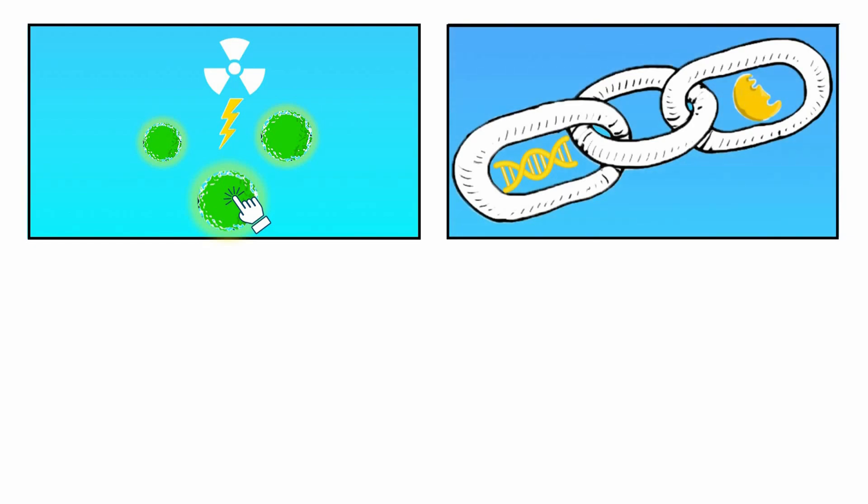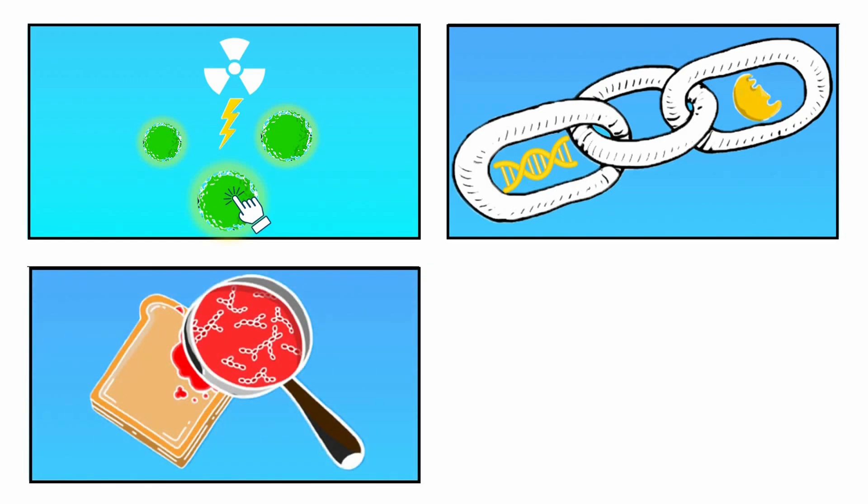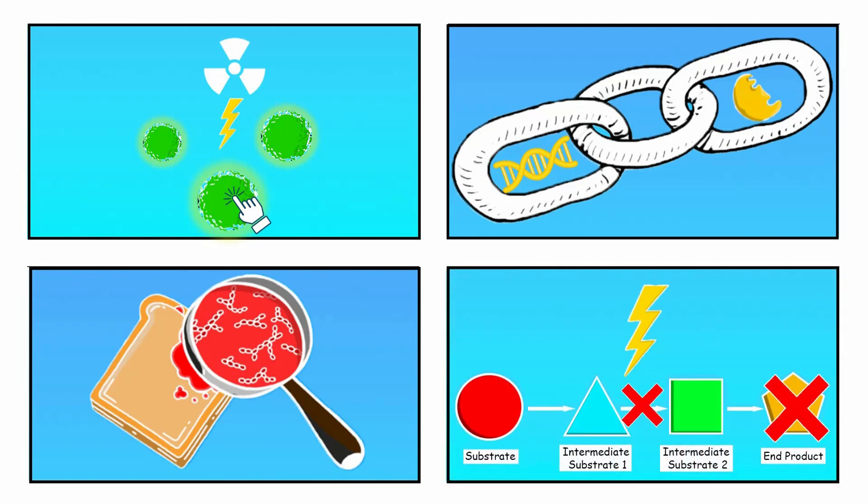It suggested a simple connection between genes and the traits they control. It also illustrated how useful microorganisms like Neurospora could be in biochemical experiments, and how to use radiation to cause mutations within biochemical pathways involved in the making of important molecules.